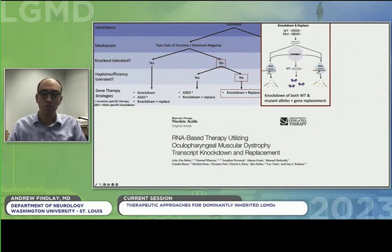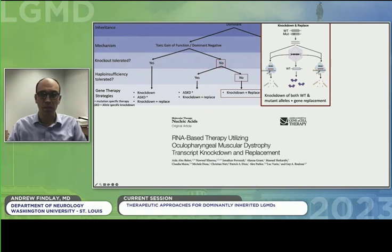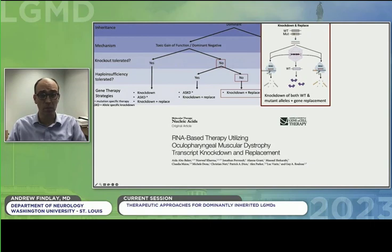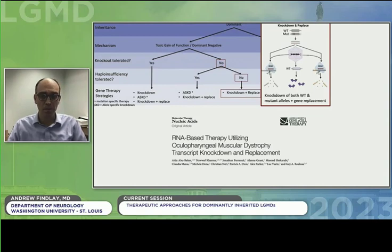Another treatment approach involves complete knockdown of a gene while simultaneously providing a replacement copy of that gene that is resistant to knockdown. This strategy uses an adeno-associated virus to deliver the necessary genetic cargo, and by delivering a replacement copy of the gene, it avoids the potentially damaging effects from knockdown even if over 50% of the protein levels are required. Although it hasn't been tested in any dominant limb girdles, this approach has been found to be beneficial in mouse models of several other dominantly inherited neuromuscular disorders, specifically oculopharyngeal muscular dystrophy.